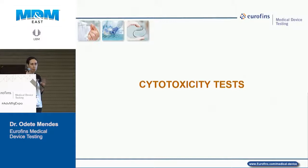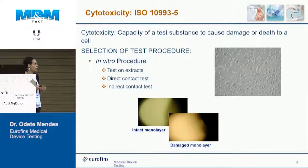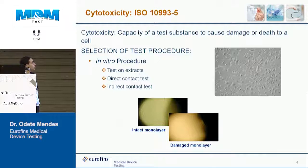I'm going to briefly cover these categories to give an overall idea of what these tests are. Starting with the most common — cytotoxicity — required for pretty much every single type of medical device. Cytotoxicity is the capacity of a test substance, in the case of a medical device its extract, to cause damage or death to a cell. This shows what an intact cell monolayer looks like versus when cells are dead and not there.